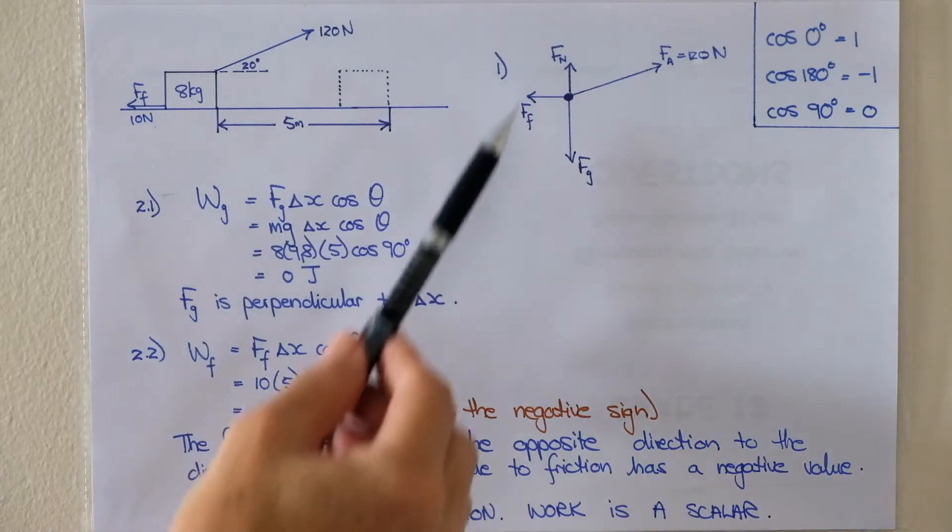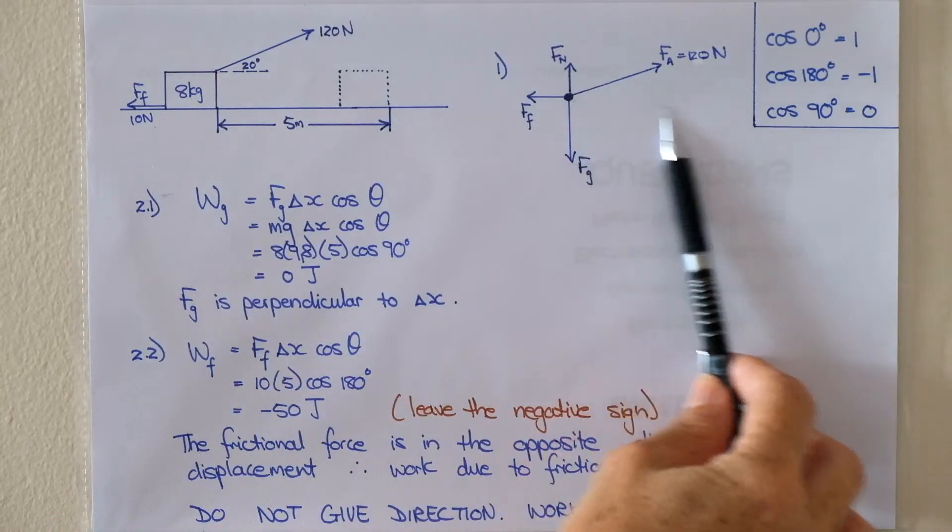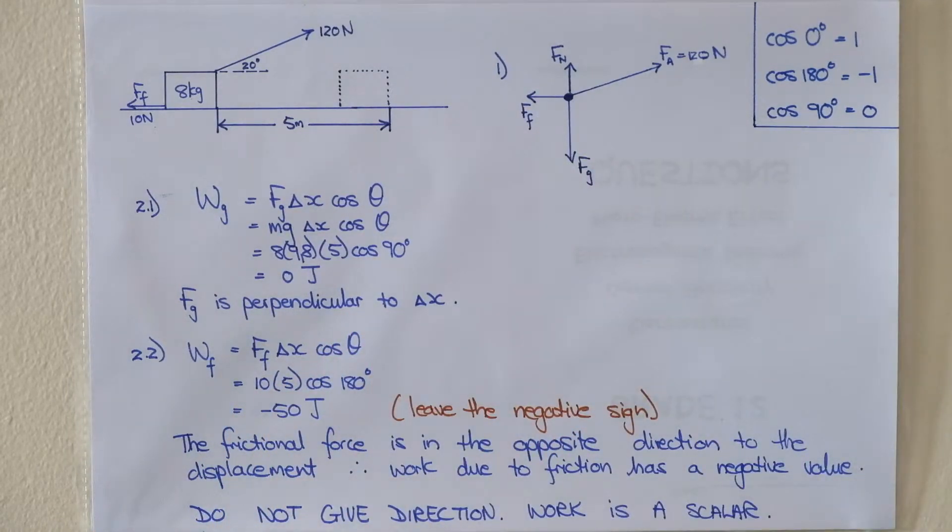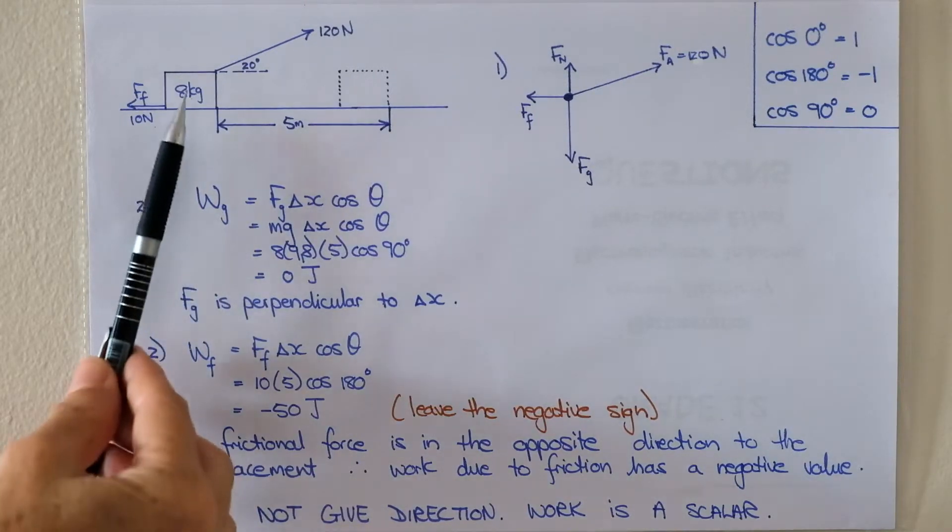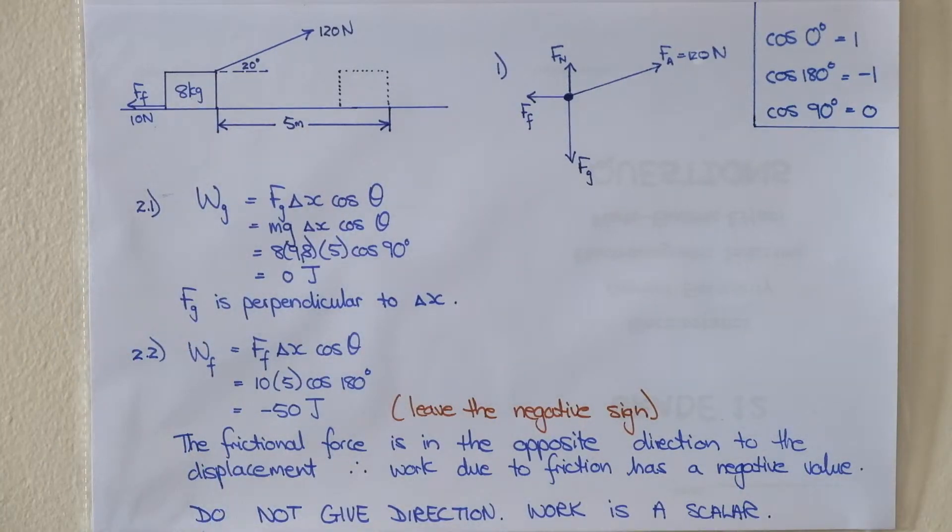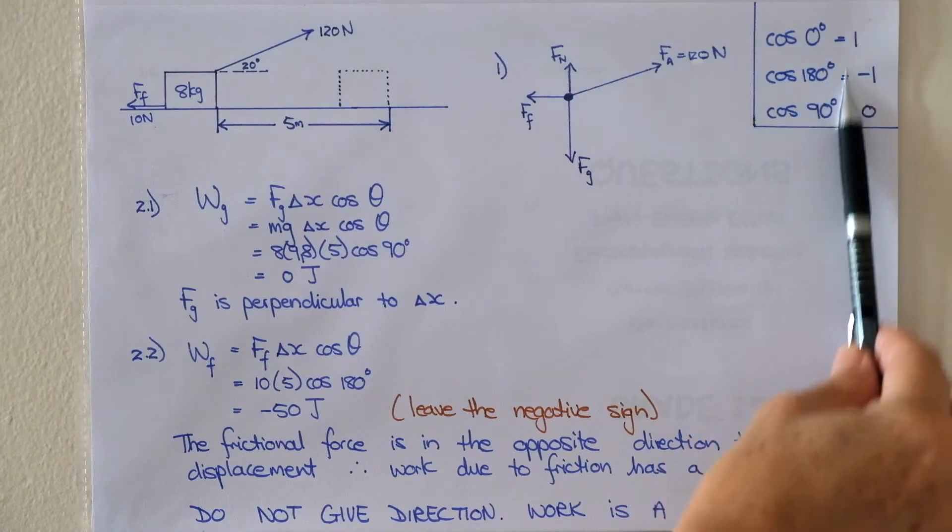Now please remember theta is the angle between the force and the displacement. The force is down the displacement is to the right horizontally so the angle is 90 degrees. Cos of 90 is zero. You can substitute your values in your answer will still be zero joules. So the work done by the gravitational force on this box is going to be zero joules.